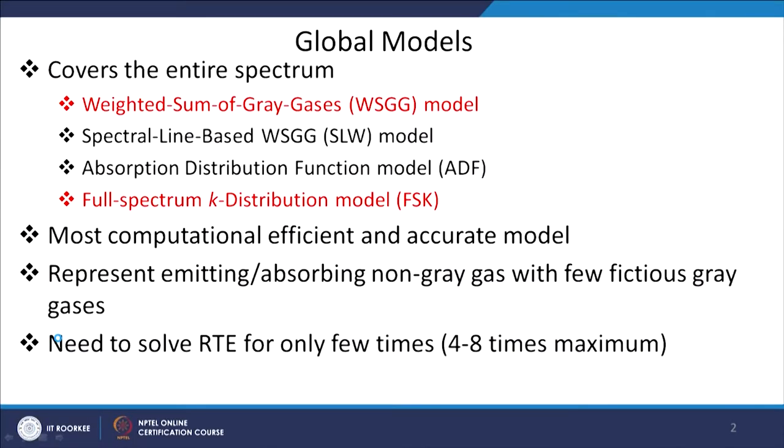In this category, we have a number of models. In this lecture, we will focus on the weighted sum of gray gases (WSGG) model, which has gained very much popularity in radiative heat transfer after its development for the zone model. The global models employed in radiative heat transfer include: weighted sum of gray gases, spectral line-based weighted sum of gray gases, absorption distribution function, and the k-distribution model. All these models have in common that we represent the gas in the form of fictitious gray gases.